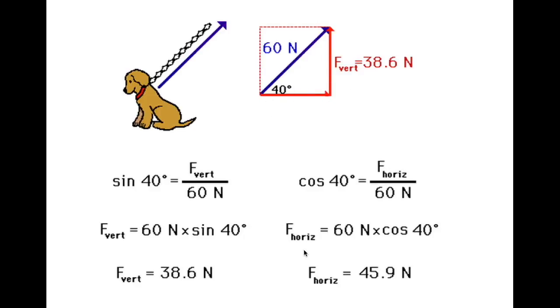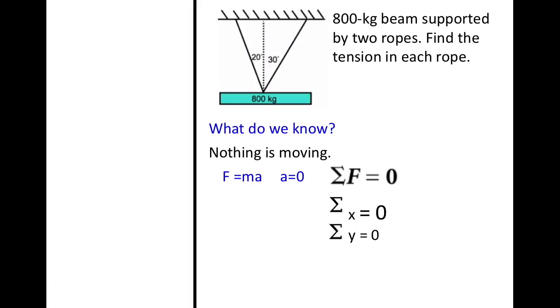For my x axis, I figure this to be 45.9 newtons. An 800 kilogram beam supported by two ropes. That is what we are looking at.